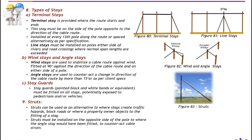Wind stays and angle stays. Wind stays are used to stabilize a cable route against wind, fitted at 90 degrees against the direction of the cable route and on either side of a pole. Angle stays are used to counteract a change in direction of the cable route by more than 15 degrees or as per client specifications. Number two: stay guards — painted black and white bands or equivalent must be fitted on all stays potentially exposed to pedestrians and/or vehicles.